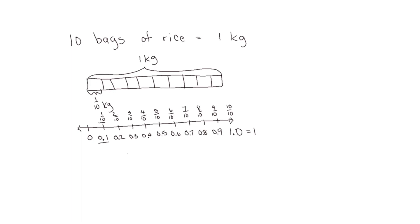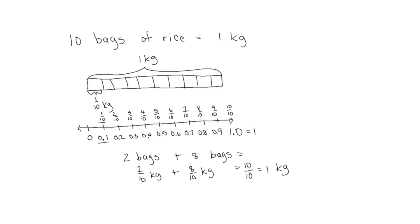If we want to write this as an addition sentence we can do that. Two bags of rice plus eight bags of rice: in fraction form, two bags of rice would weigh two tenths of a kilogram, eight bags of rice would weigh eight tenths of a kilogram, so together they would weigh ten tenths or one kilogram. We can write this in decimal form as 0.2 kilograms plus 0.8 kilograms equals ten tenths or one whole kilogram.